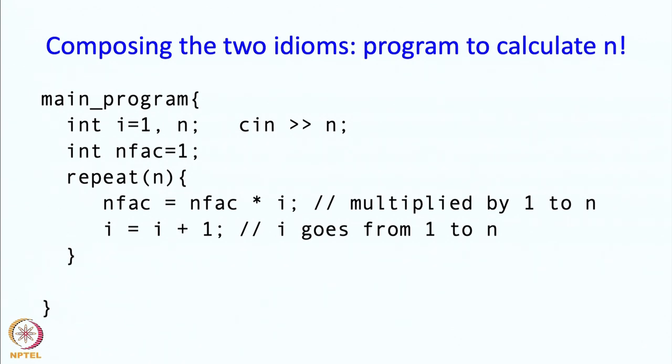So the first time around nfac will get multiplied by 1. The second time around nfac will get multiplied by 2, 3, 4, all the way till n. So at the end if we print nfac we will get n factorial printed.